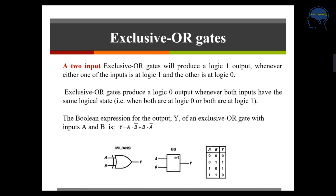Next is the exclusive OR gate. The symbol for XOR gate has inputs A and B, and the Boolean expression is Y equal to AB bar plus A bar B. A two-input exclusive OR gate will produce a logic 1 output whenever either one of the inputs is at logic 1 and the other is at logic 0. In the truth table, when inputs are 0 0, output is 0, and when inputs are 1 1, output is also 0. Only when one input is logic 1 and the other is logic 0 does the XOR gate give output 1.